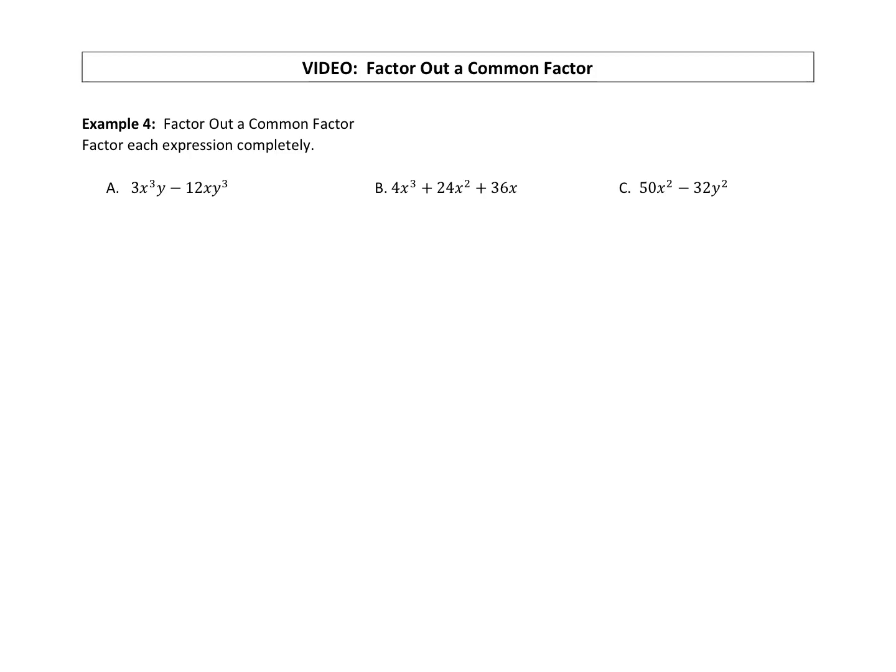All right, last video of topic seven. So the video is called Factor Out a Common Factor. So we're going to look for a GCF, which is what we always should do. But we're just going to mix up a few ideas here together and do some factoring completely.